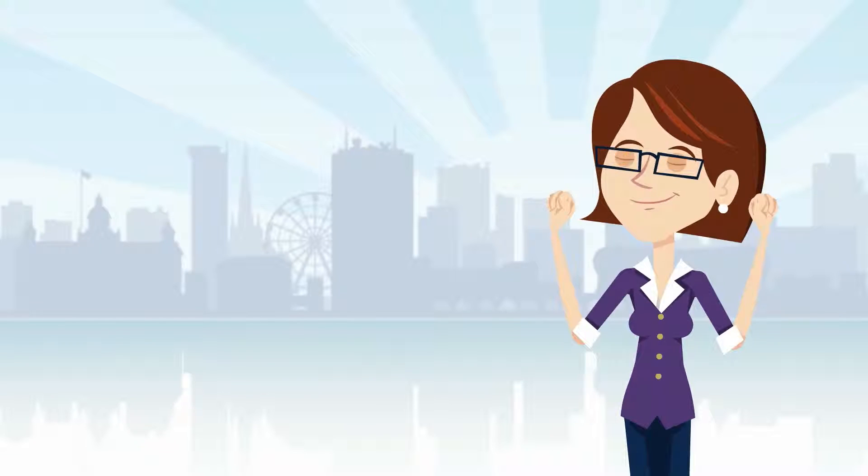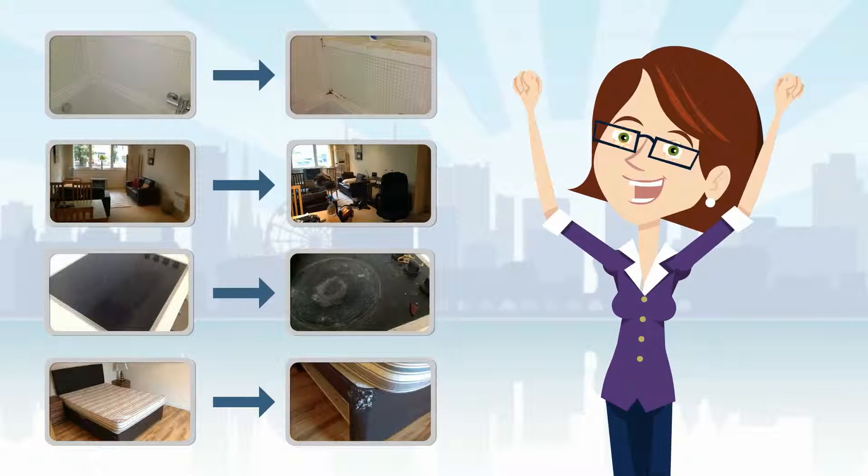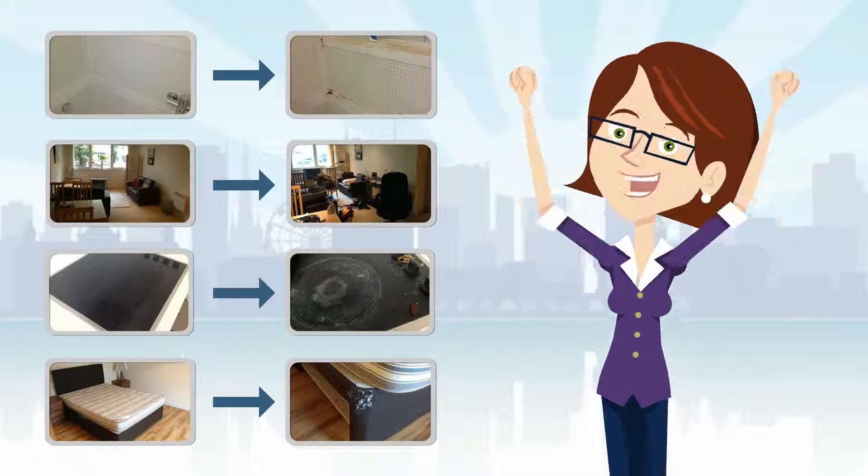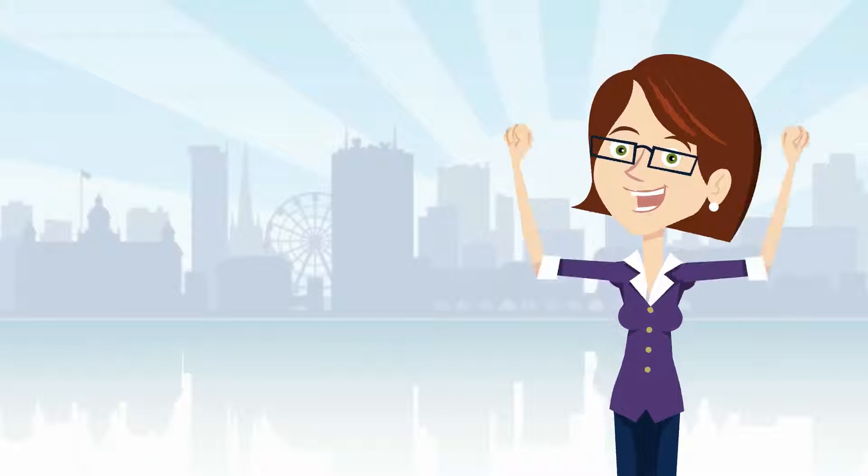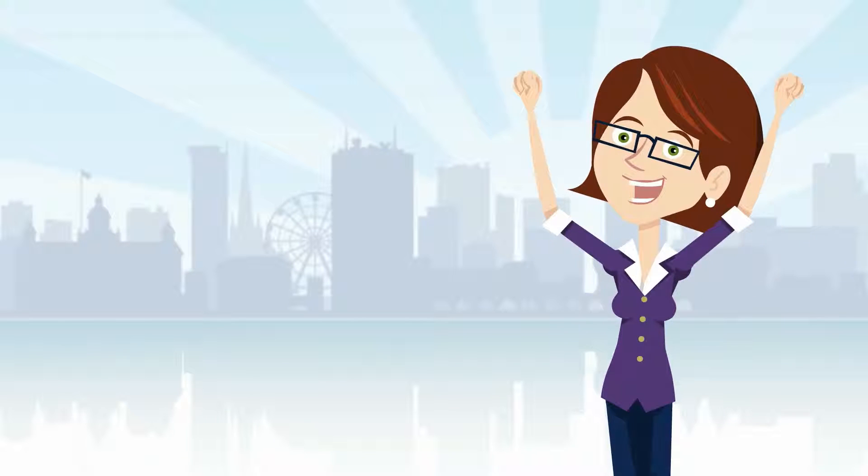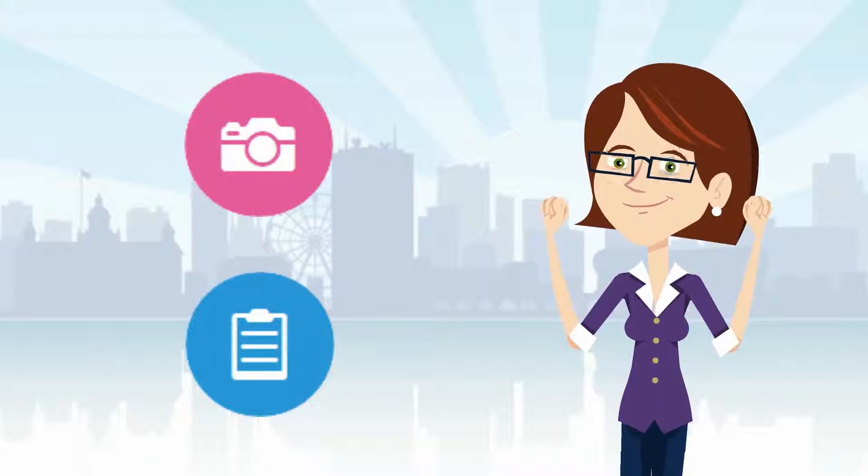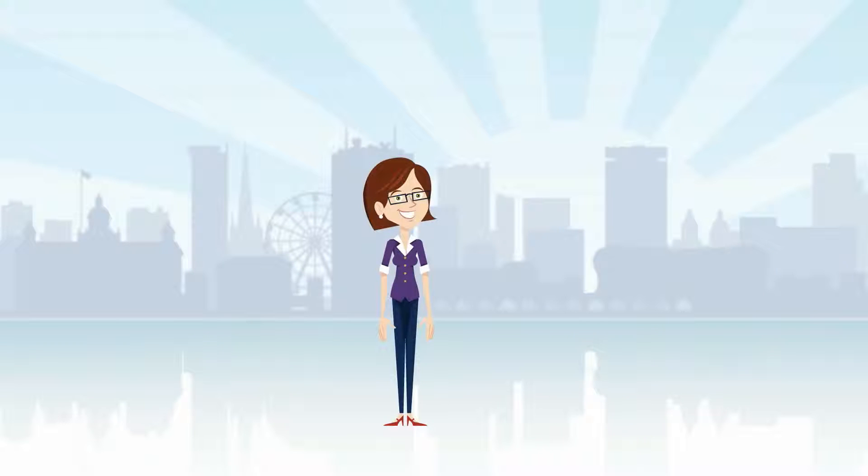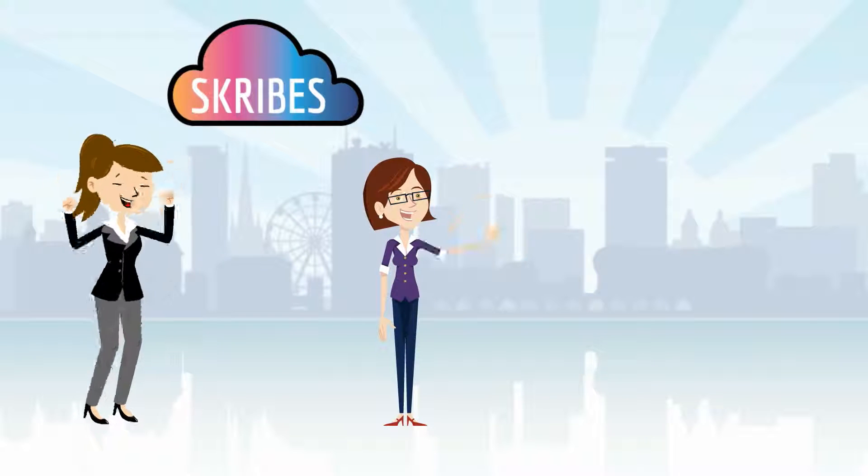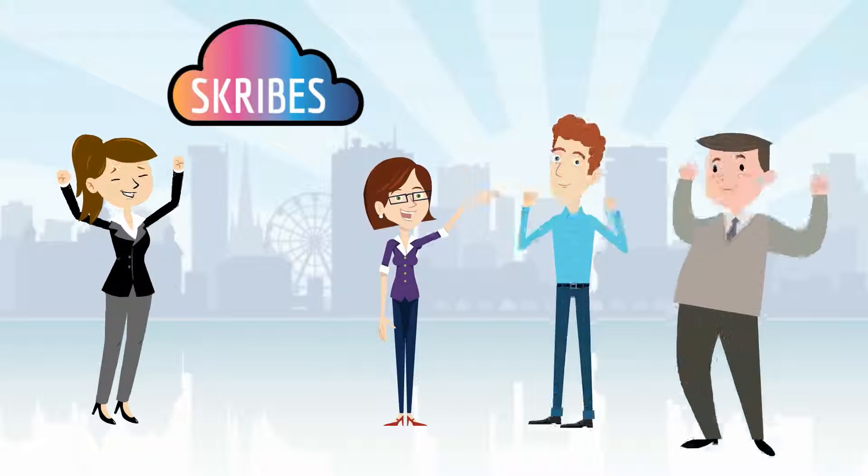Alice looks at the report and is able to see a clear comparison between the conditions at the start of the tenancy and its current condition. This helps her fairly apportion the tenant's deposit using the clear photographic and written evidence. Alice finds that the evidence provided by Scribes prevents disputes arising, helping to keep all parties happy.